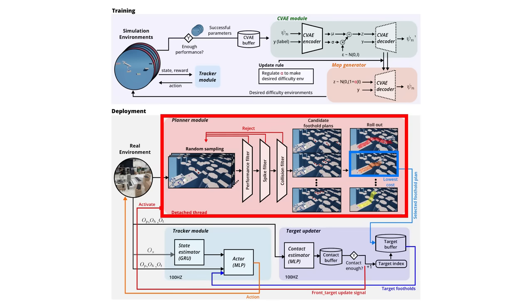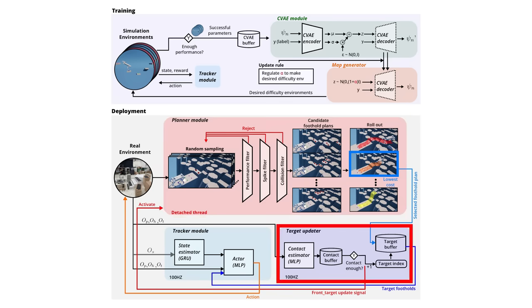The planner module generates a feasible foothold from the map. The target updater changes the target foothold for the robot to step on. The tracker module controls the robot to accurately step on the given target foothold.